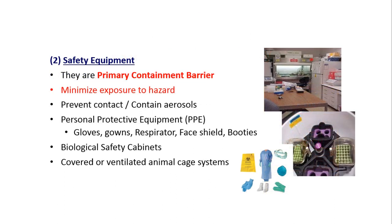The second important aspect of biosafety is safety equipment, also called primary containment barriers. They minimize exposure to hazardous materials and prevent contact with or contain aerosols. PPE — personal protective equipment — includes gloves, gowns, respirators, face shields, booties, and shoe covers. We can also include biosafety cabinets and, in animal facilities, covered or ventilated animal cage systems.